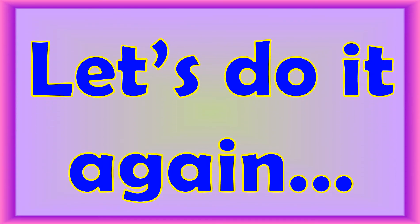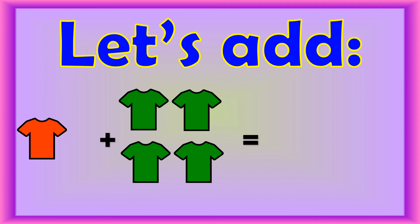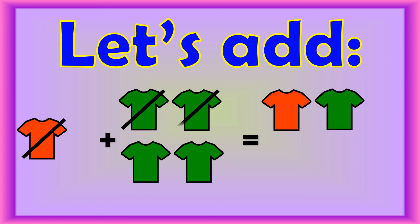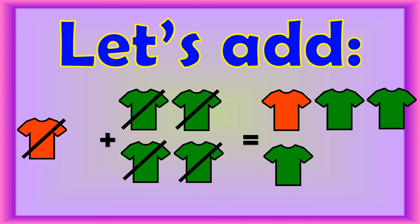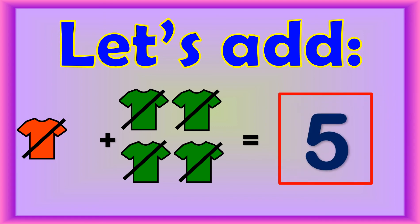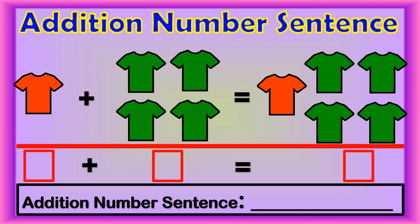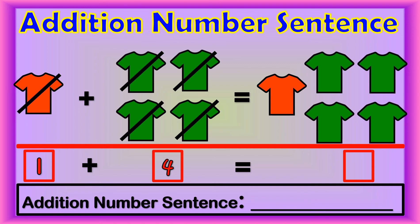Let's do it again! Let's count the orange and green shirts. 1, 2, 3, 4, 5! There are 5 shirts in all. Let's write the addition sentence. First, count the orange shirts. 1, 2, 3, 4! Now count the green shirts. 4 green shirts.